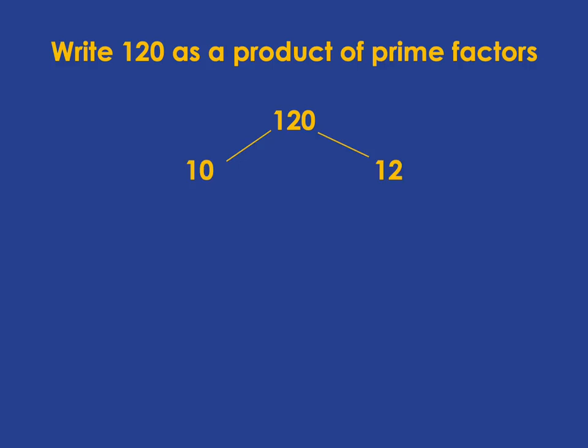You could choose 40 times 3. You can choose any two numbers that multiply together to give you 120. It doesn't matter what you start with. We'll all end up in the same place.